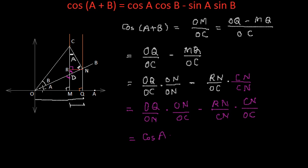ON by OC, ON is this line by OC, is again the base by hypotenuse for the angle B in triangle CON so this will be equal to cos B. RN by CN, RN is the part of triangle CRN, RN by CN is perpendicular by hypotenuse for the angle A so this will be sin A.